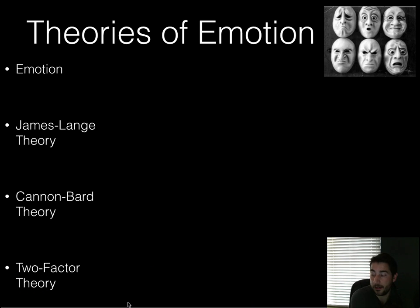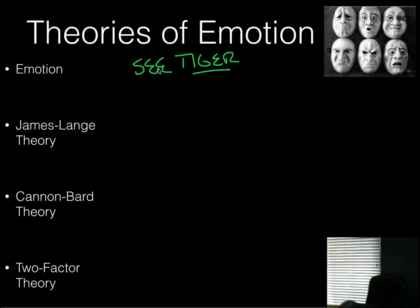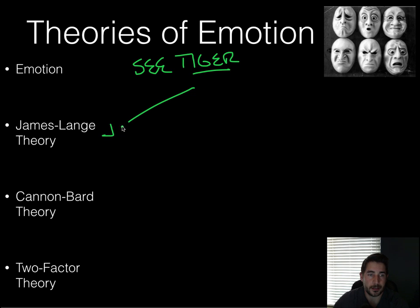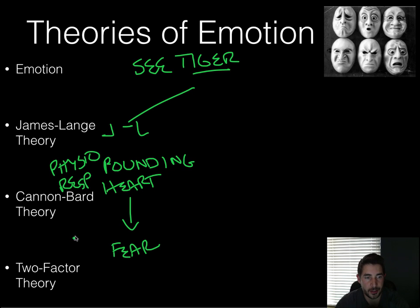Let's put this into a little graph. Let's say you see a tiger. For the James-Lange theory: you see a tiger, your heart starts pounding — that's your physiological response — and then you become fearful. So the physiological response comes first, then the emotion.